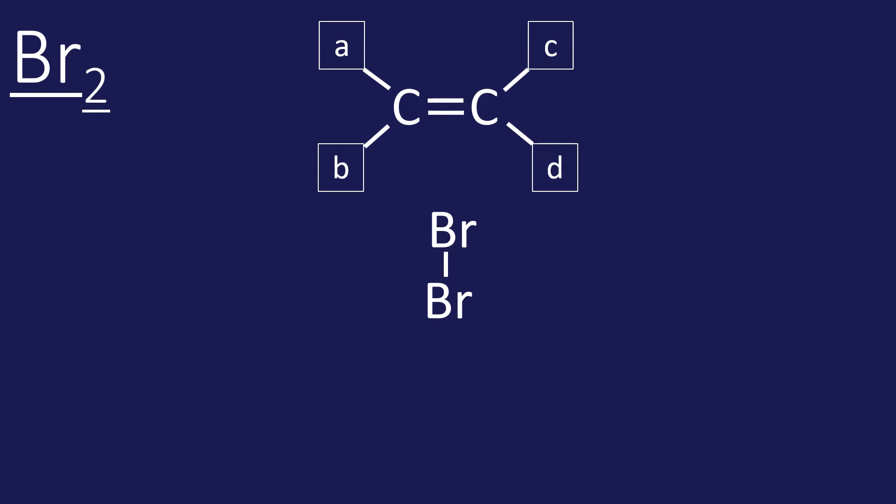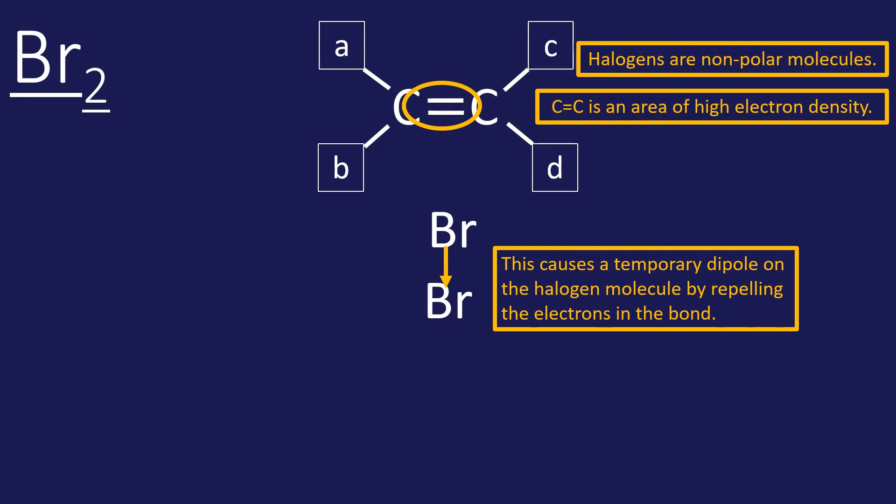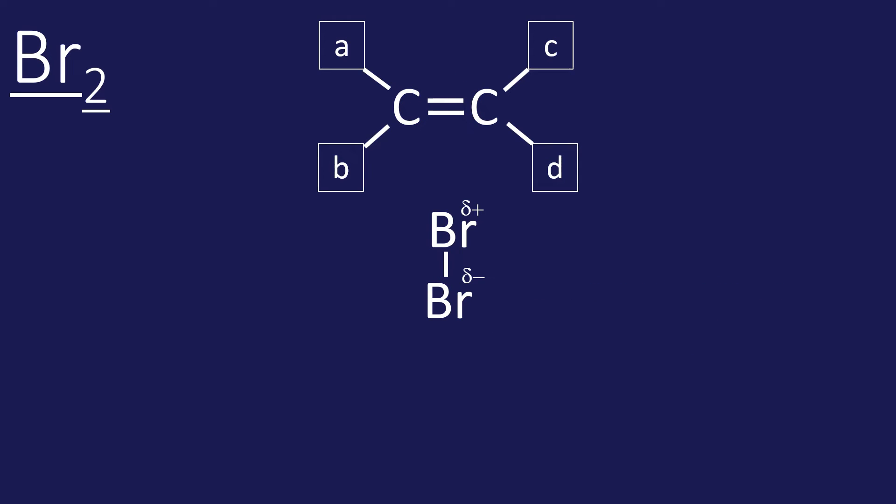We do have a slight problem here because bromine is in fact non-polar. Halogens are non-polar. But what do we have here? This is an area of high electron density. It's a double bond, there's four electrons there. That's loads of electrons. Electrons are negative, so that causes a repulsion of these electrons because electrons are negative and electrons are negative, they repel. So it actually causes a temporary dipole in the halogen. You're probably going to forget that though, and it'll be three marks of the exam.